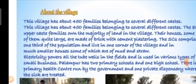The upper caste families own the majority of the land in the village. Their houses, some quite large, are made of brick with cement plastering. The lower castes, comprising one third of the population, live in one corner of the village in much smaller houses, some made of mud and straw. Among 450 families, very few are rich and more are poor — the population of poor families is more in Palampur.